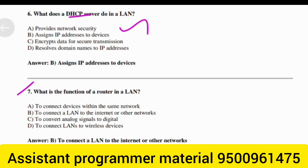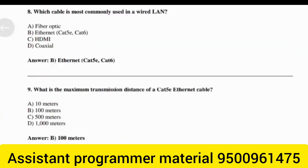What is the function of a router in a LAN? Answer: Option B — To connect a LAN to the internet or other networks. Which cable is most commonly used in a wired LAN? Answer: Option B — Ethernet Cat5e or Cat6.